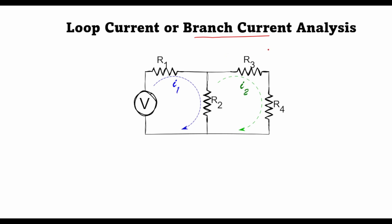In my previous lecture we looked at loop current analysis and we solved this circuit by formulating loops in the two meshes of this network. There's another way of solving KVL equations. Rather than having these loops in the meshes, we can formulate currents in the branches.